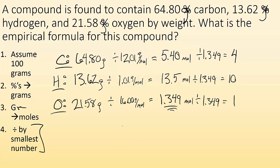And I divide by 1.349 for the last one, and I get 1. So it's saying, carbon, I have 4 of them. Hydrogens, I have 10 of them. And oxygens, I have 1 of them. And you don't have to write that 1. If I just put oxygen, I know there's 1. And that is my empirical formula. That's how you do that.